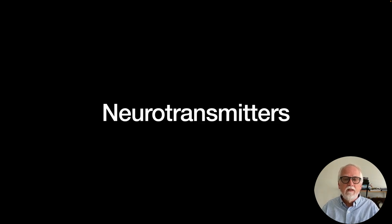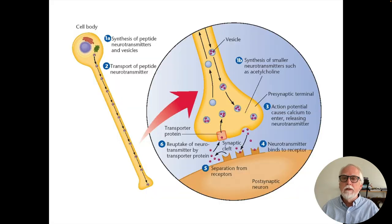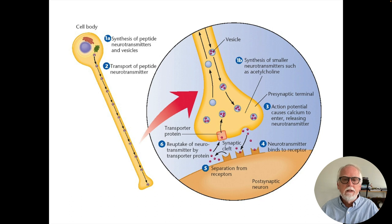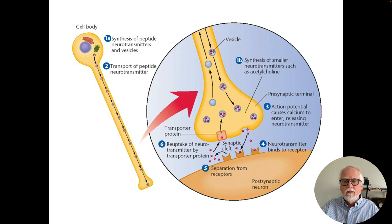Let's talk about those neurotransmitters released by each axon terminal. Neurotransmitters are made by the neurons themselves. Some, known as peptide neurotransmitters, are created in the cell body and then transported along the axon to the terminals during times of rest. Other neurotransmitters, such as acetylcholine, are actually manufactured right at the axon terminal. What kind of neurotransmitter a neuron makes depends on its DNA code in the cell body.